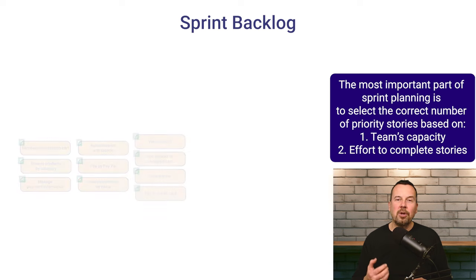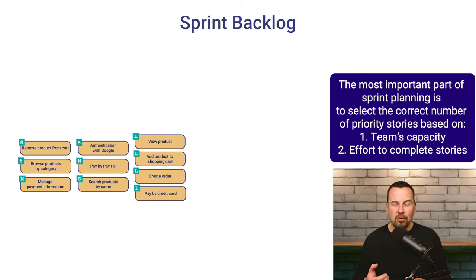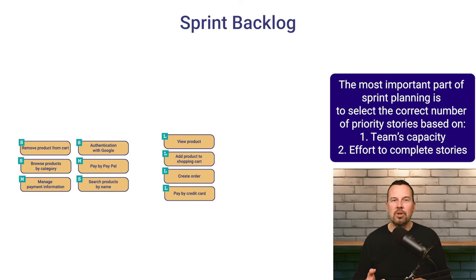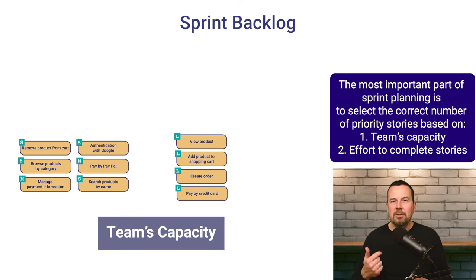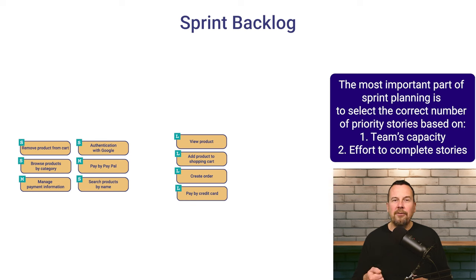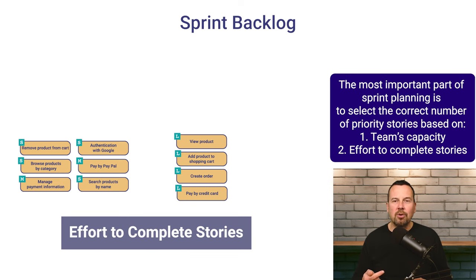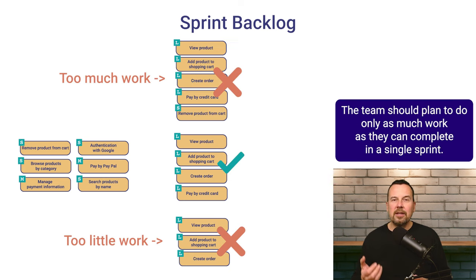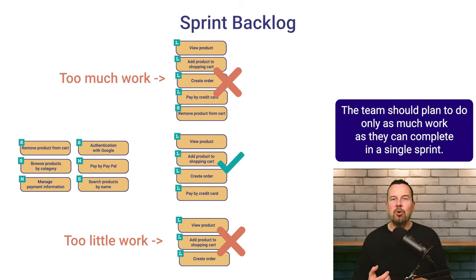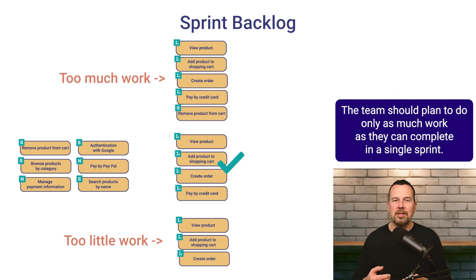An important part of sprint planning is to select the correct number of stories based on two things: the team's capacity — how much work the team can do — and the effort required to complete these stories — how much work is needed to complete the sprint backlog. The team should plan to do only as much work as they can complete in a single sprint.